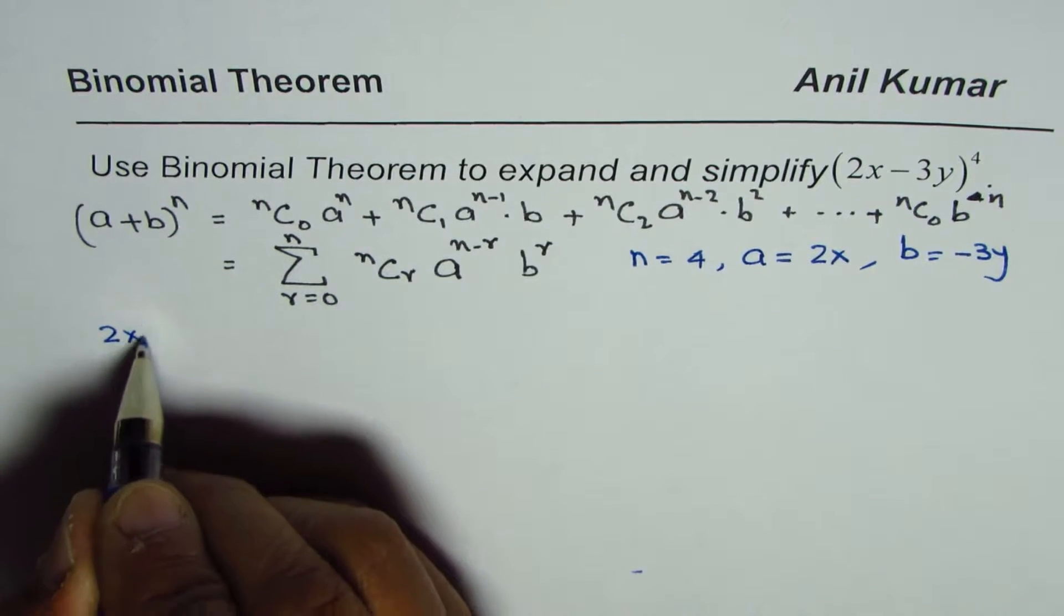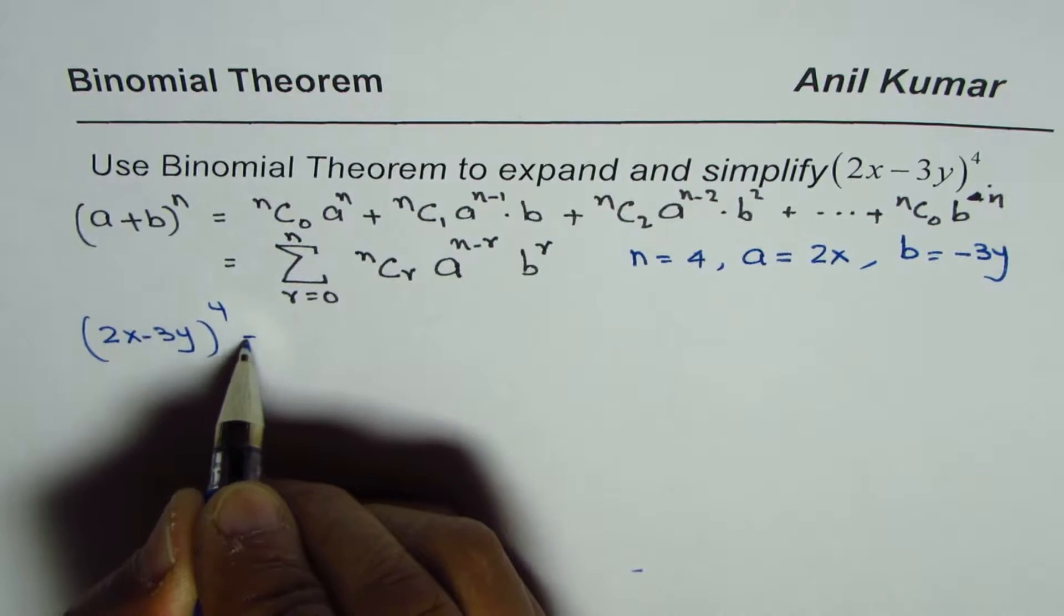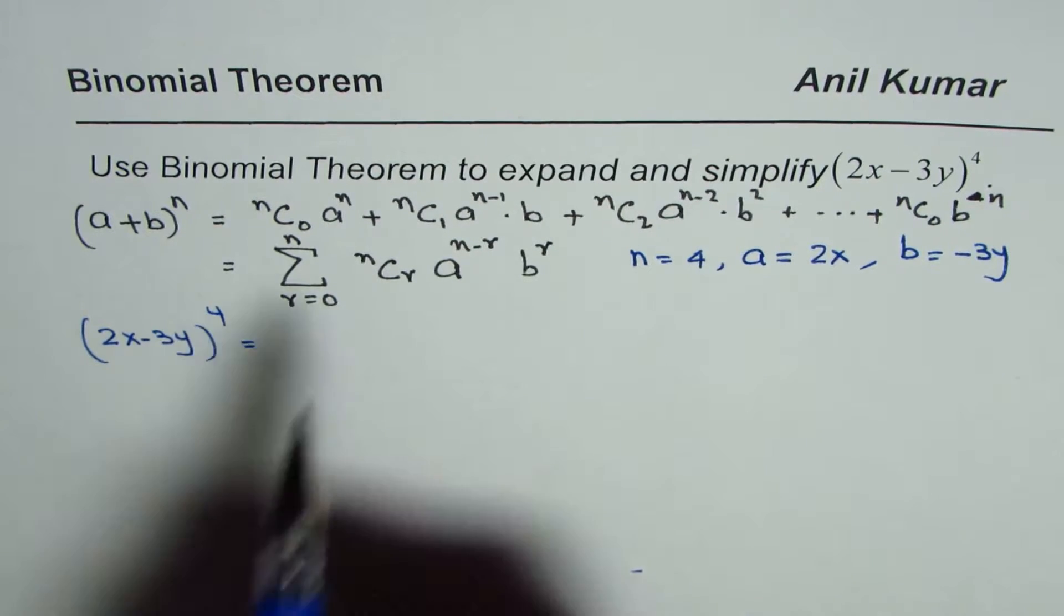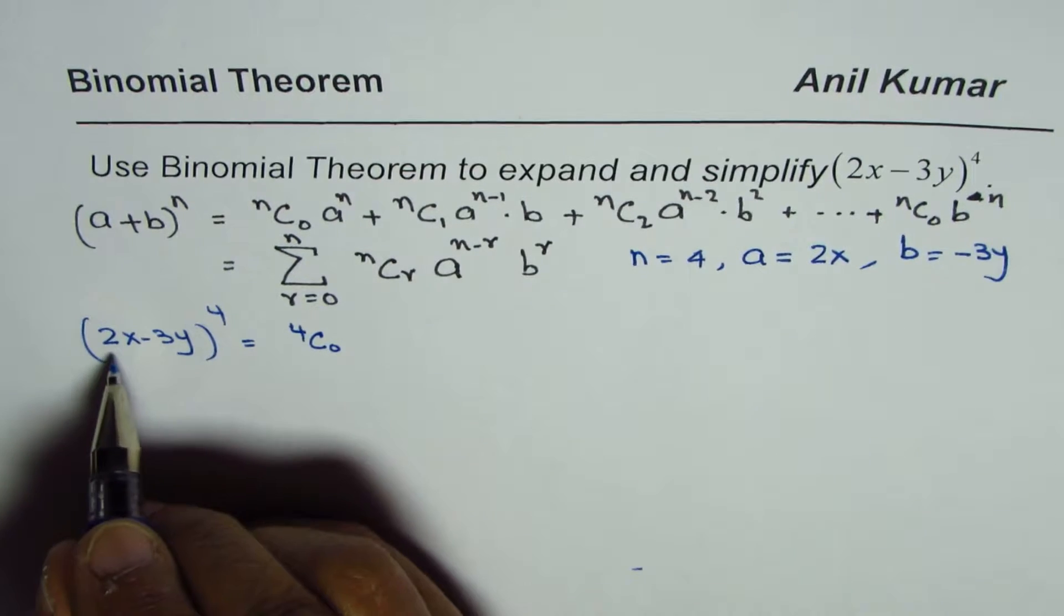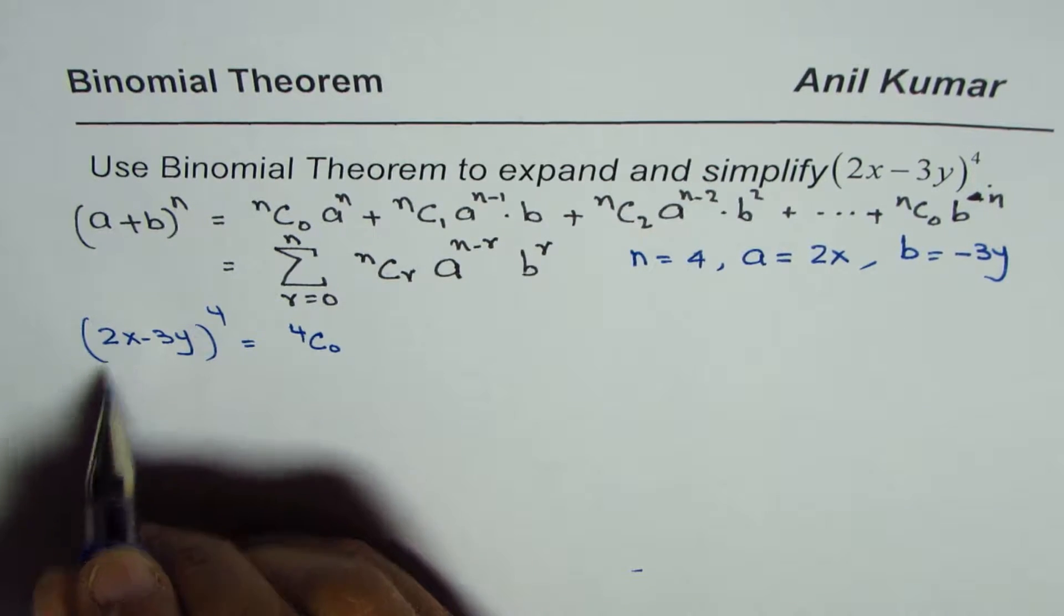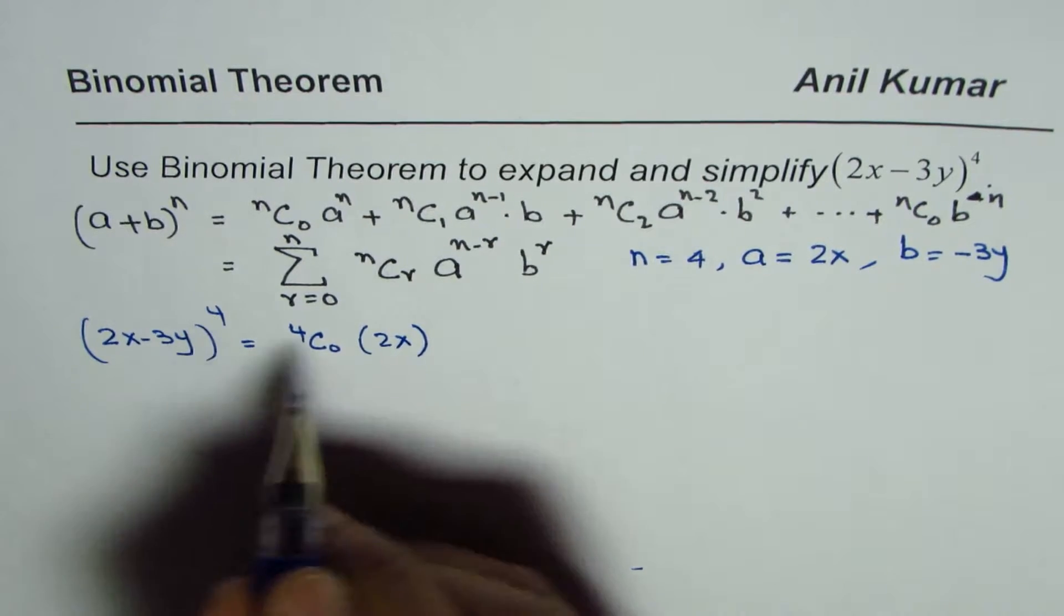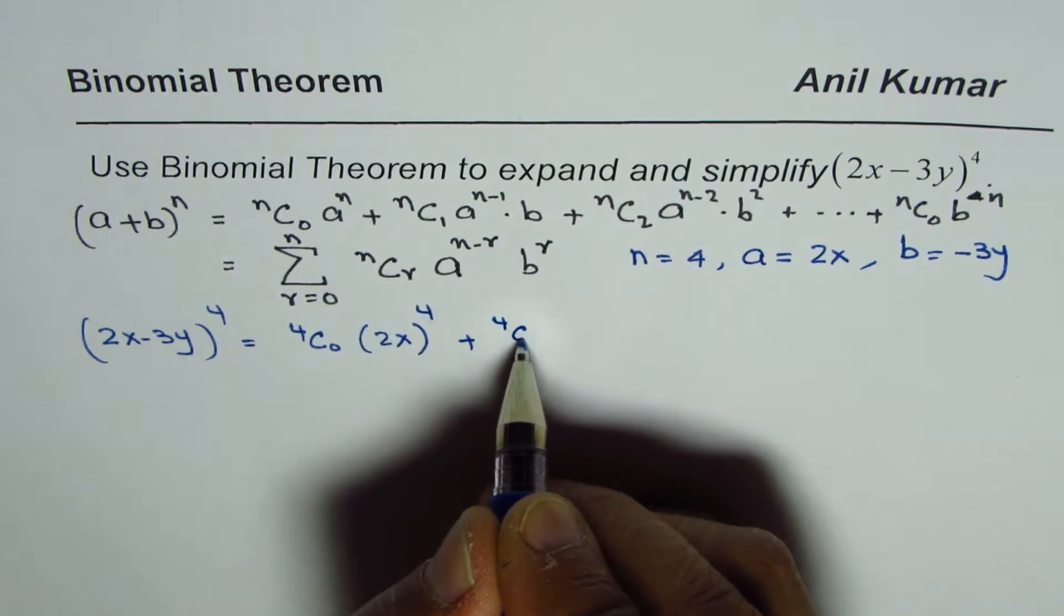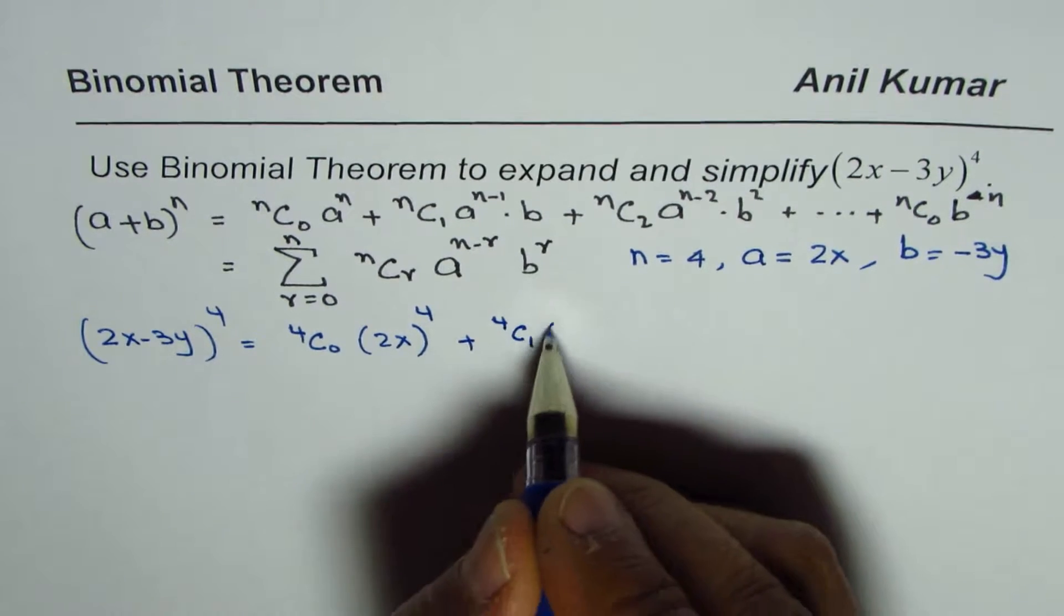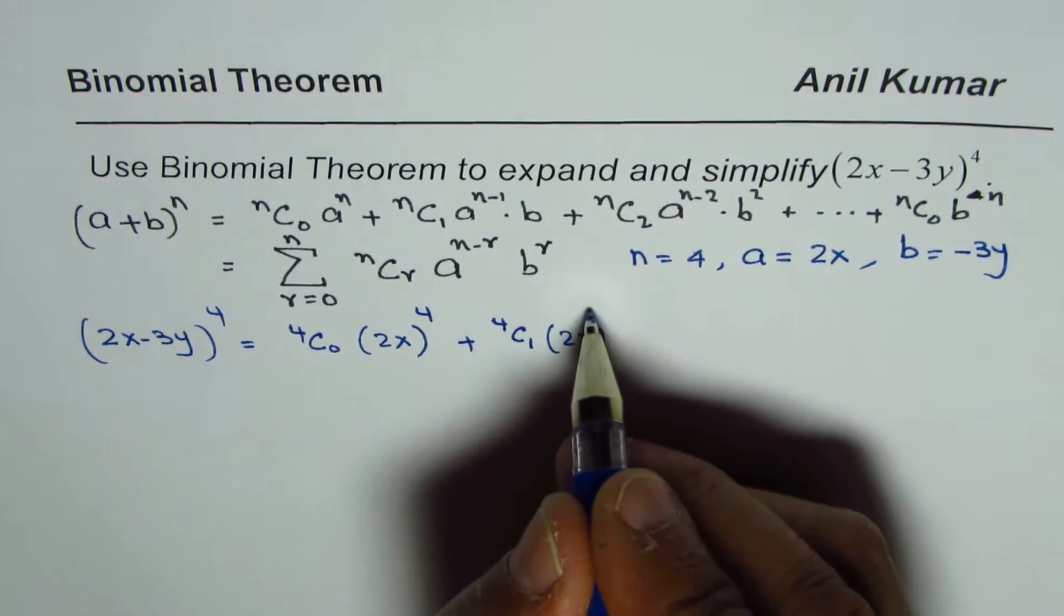We have 2x minus 3y to the power of 4. n is 4. So we can write here as 4C0 a is 2x, so we have 2x to the power of n which is 4 plus 4C1 a is 2x. The power decreases as we move on.